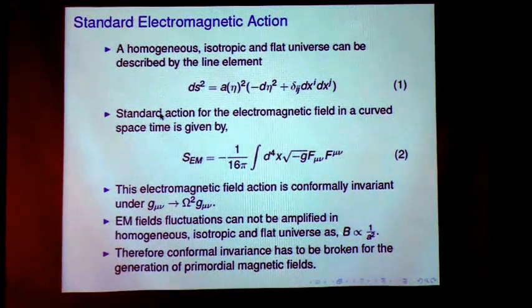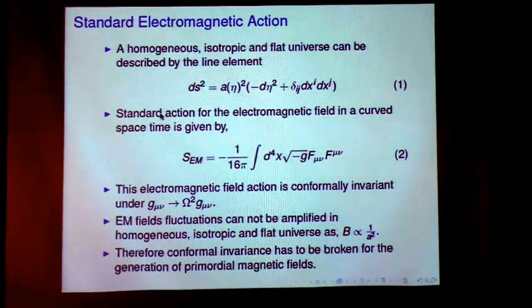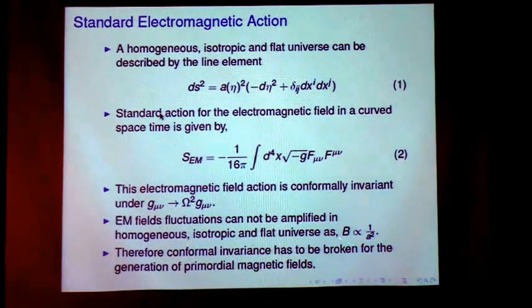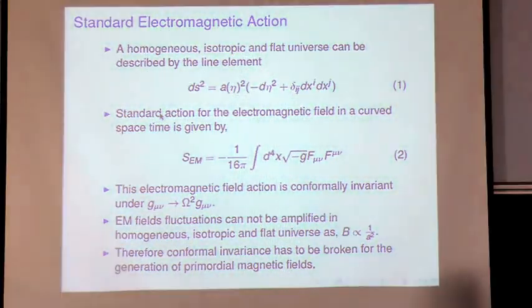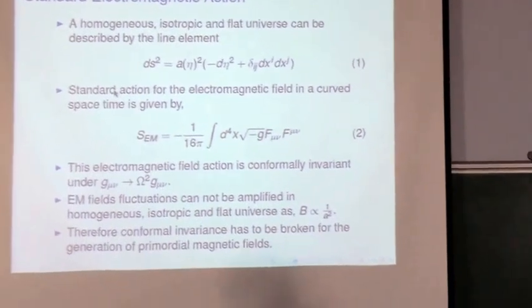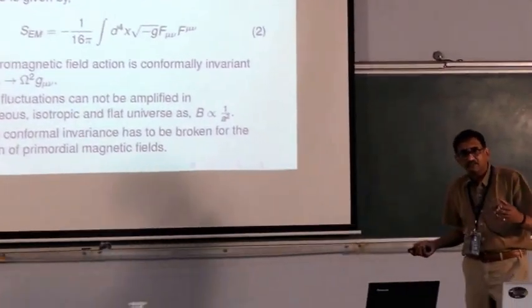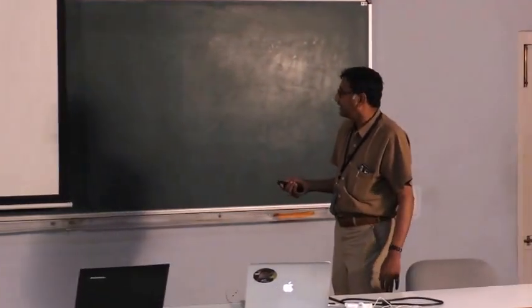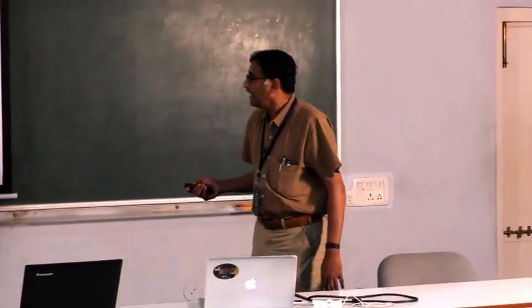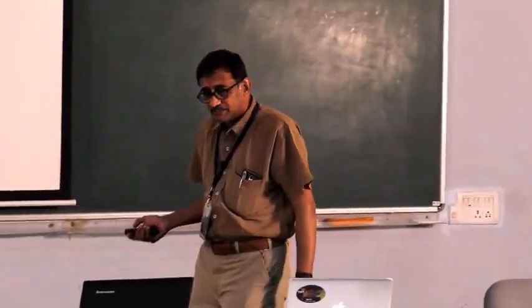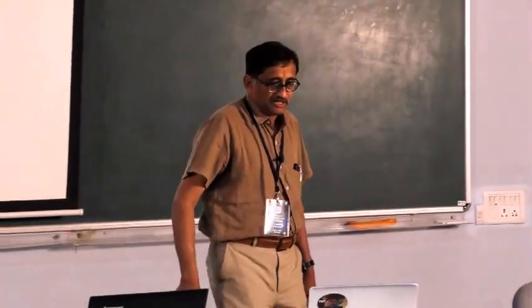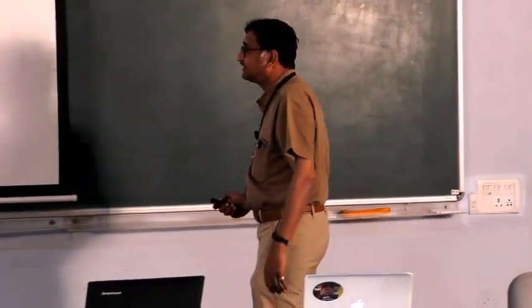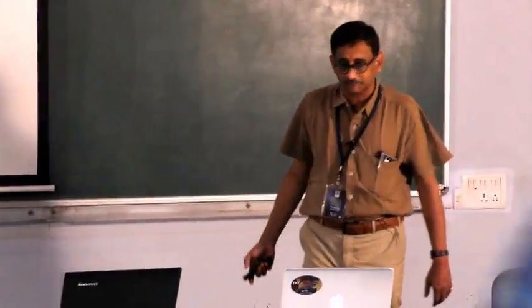In this situation, electromagnetic field fluctuations cannot be amplified in a homogeneous isotropic flat universe. So the magnetic field B will go as 1 by A square where A is the scale factor. And if you take A square into B, which is like the total flux, because A is a length scale and A square is like area, that total flux remains constant with expansion. And so in order to generate magnetic fields, one would have to break the conformal invariance for this purpose.